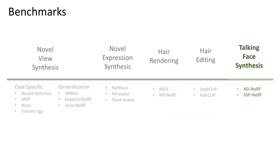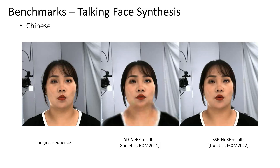Since our dataset contains speech visuals and audios, it can also serve for talking face synthesis. We tested AD-NeRF and SSP-NeRF on Chinese and English sentences separately. SSP-NeRF shows a clearer upper body and better mouth movements.